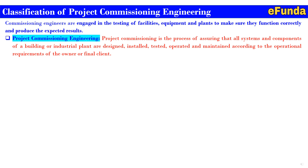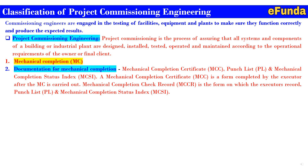The first classification is mechanical completion (MC). Mechanical completion of the project is achieved when the work has been completed mechanically and structurally in good condition, and when the activities specified in the checklist have been carried out. The documentation for mechanical completion includes: the mechanical completion certificate (MCC), punch list (PL), and mechanical completion status index (MCSI). The mechanical completion package consists of the completion certificate and relevant attachments for the various activities to be carried out.